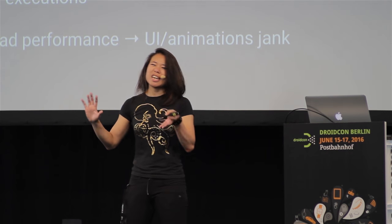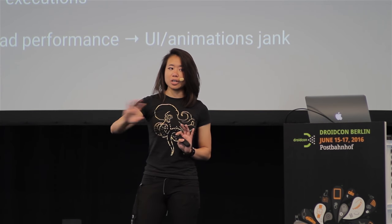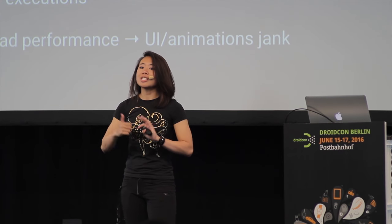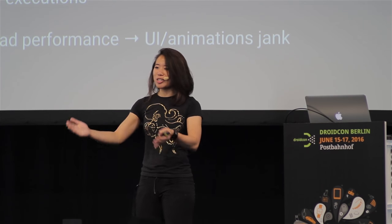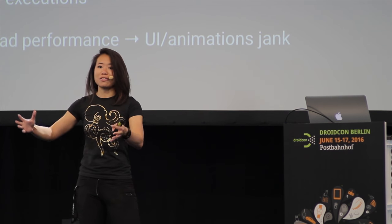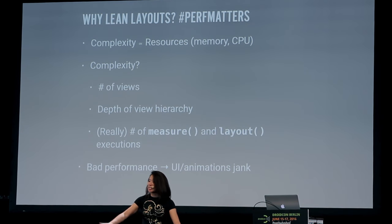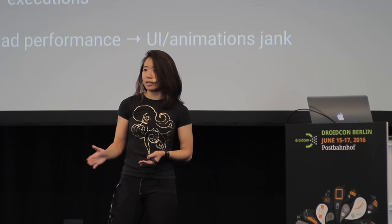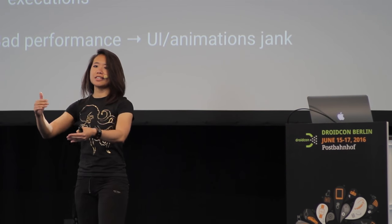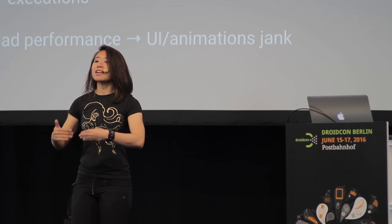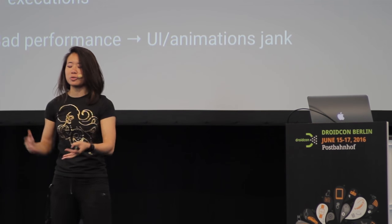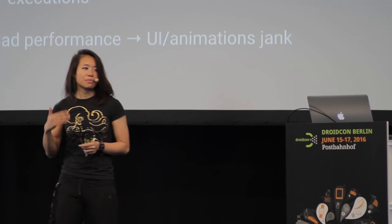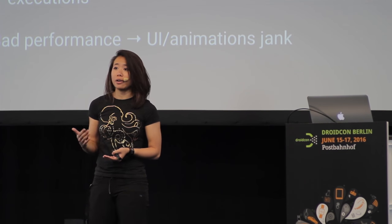How do you gauge the complexity of a layout? I tend to think along two lines. First is the number of views — the more views you have, the more memory that layout will take. You need to instantiate those views; you need memory for that. Another way to think about complexity is through the depth of the view hierarchy. If you have views nested in views nested in views, that becomes more complex, with more dependencies and more relationships, making the processing of that view hierarchy harder.